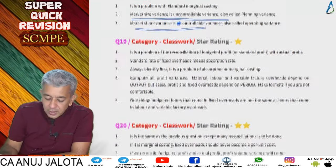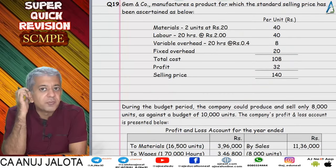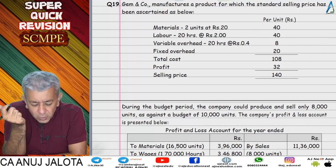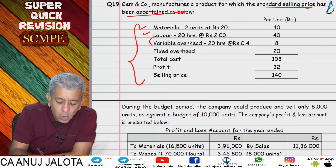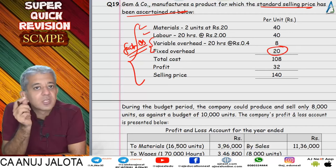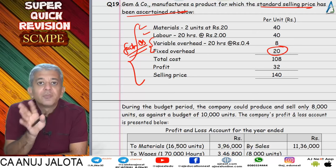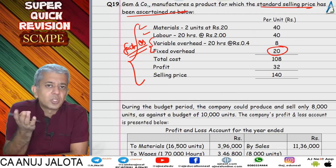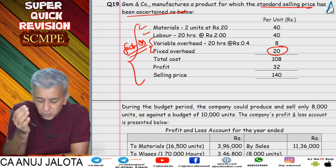Question 19 was our first full-fledged question where all things came together — the first time we did a complete question. There was one standard product with details for material, labor, and all overheads. For a manufacturing company, overheads by default are factory overheads. Fixed overheads were given per unit, which means the company follows absorption costing. If fixed overheads are given in lump sum, you can choose — but marginal costing is easier since there is only one variance: fixed overhead expenditure variance.